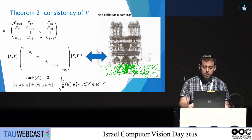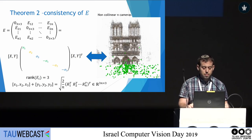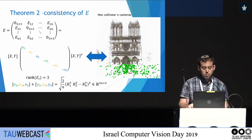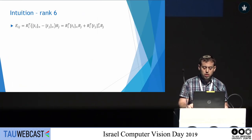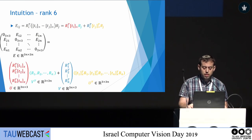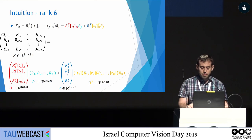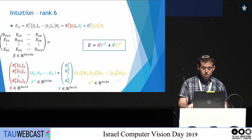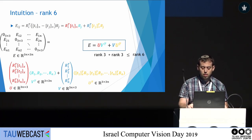Our second theorem says that an N-view essential matrix is consistent with non-collinear N cameras if and only if, in addition, the three positive and three negative eigenvalues form three pairs of the same absolute values with opposite signs, and the three vectors corresponding to the positive eigenvalues together with the three vectors corresponding to the negative eigenvalues form a block rotation matrix. For intuition of the rank 6: given camera matrices, EIJ can be expressed using camera matrices of view I and J, and the entire N-view essential matrix can be written as U times V, both of rank 3, so E is the sum of two rank-3 matrices and hence has rank at most 6.